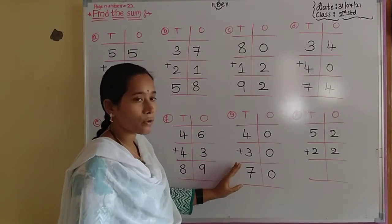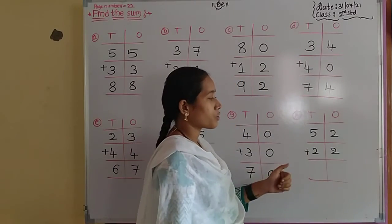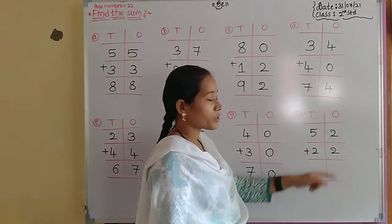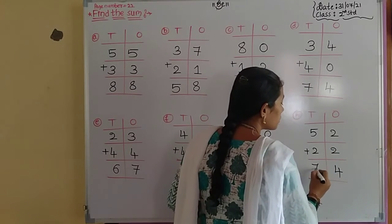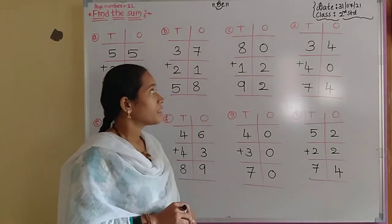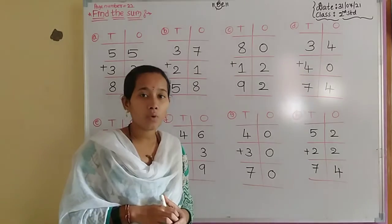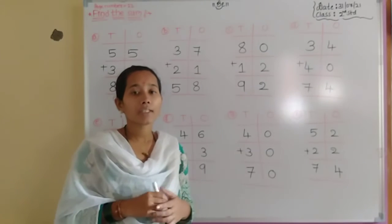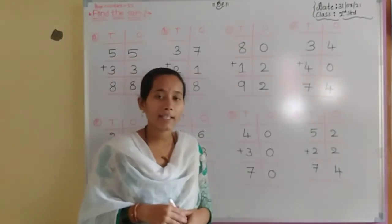Next problem: 52 plus 22. First, add the ones placement: 2 plus 2 equals 4. Then tens placement: 5 plus 2 equals 7. The sum is 74. This completes the addition of two-digit numbers without regrouping. In the next class we will discuss how to solve problems with regrouping — how to carry over in the regrouping process. Thank you.